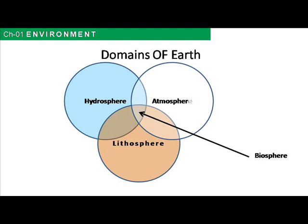Atmosphere: the word atmosphere is formed from ancient Greek words 'atmos' meaning vapour and 'sphaira' meaning sphere or bowl. It is a layer or set of layers of gases surrounding the Earth. The atmosphere of Earth is composed of nitrogen (about 78%), oxygen (about 21%), and the rest includes argon, carbon dioxide and other gases. Oxygen is used by most organisms for respiration, and carbon dioxide is used by plants for photosynthesis.